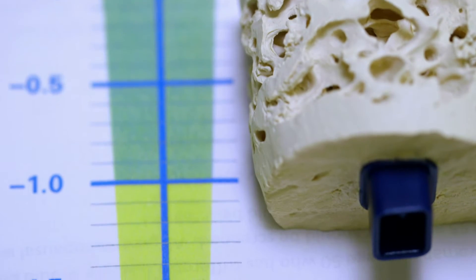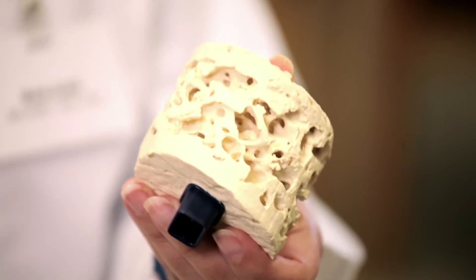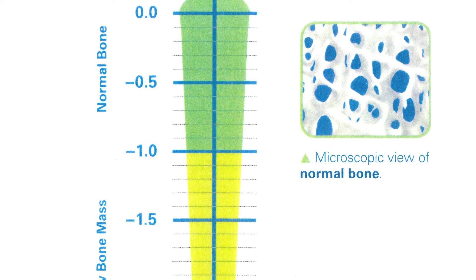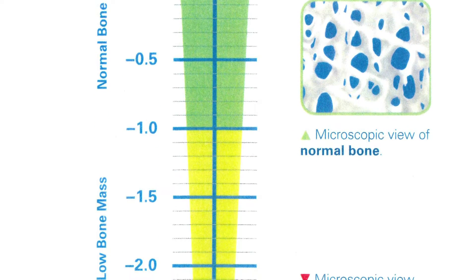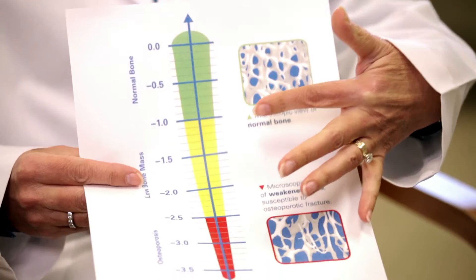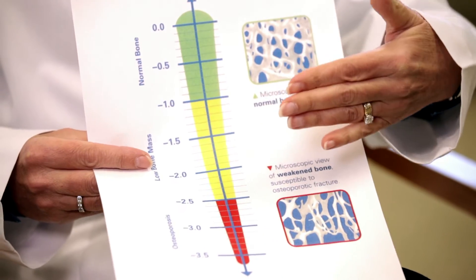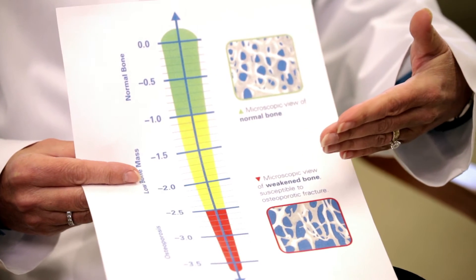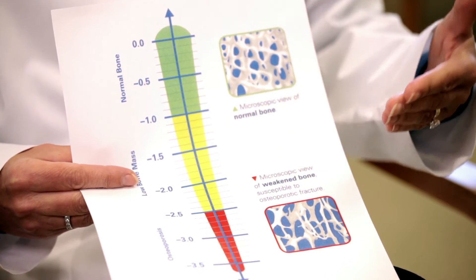These scores come out as something called T-scores. Good bone represents what we refer to as peak bone density — this corresponds to the green zone on the DEXA scale. The yellow zone is what we refer to as osteopenia, or low bone mass. This is the precursor for osteoporosis, though you don't have osteoporosis at this point. This is when you would want to incorporate some lifestyle changes.